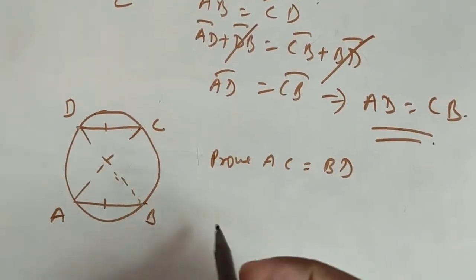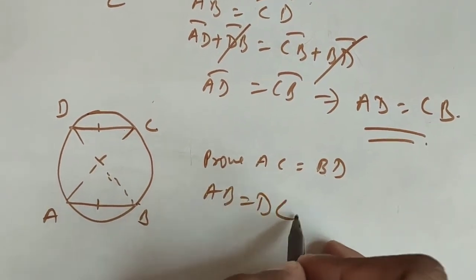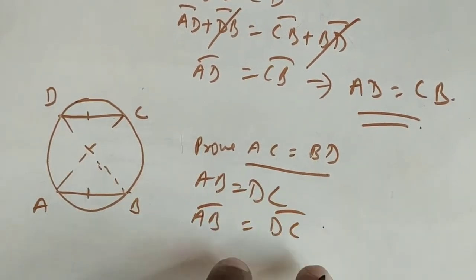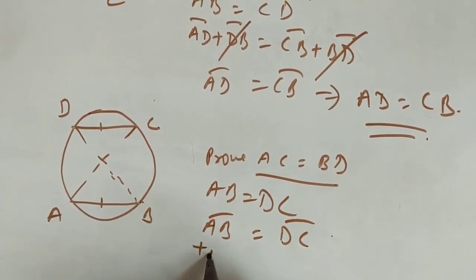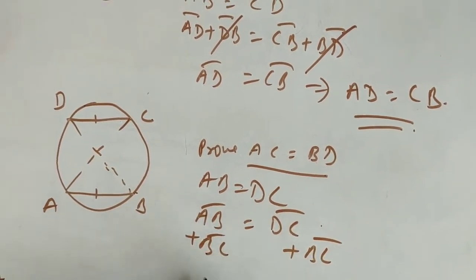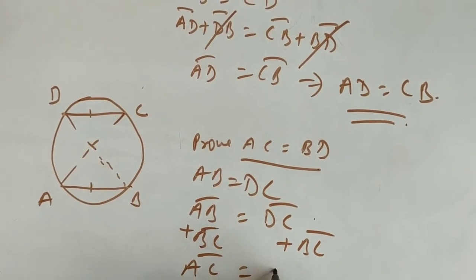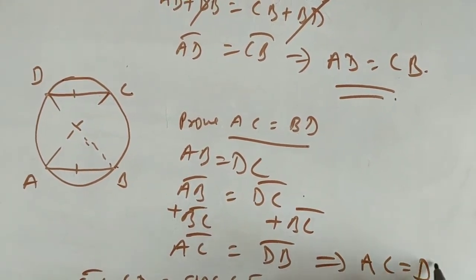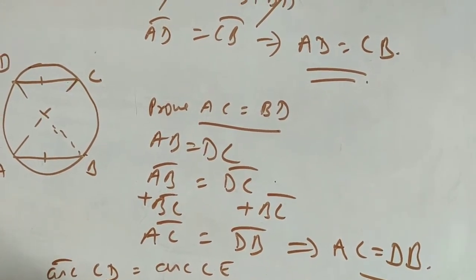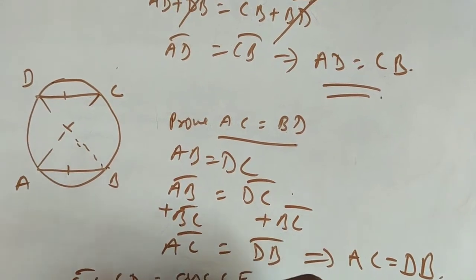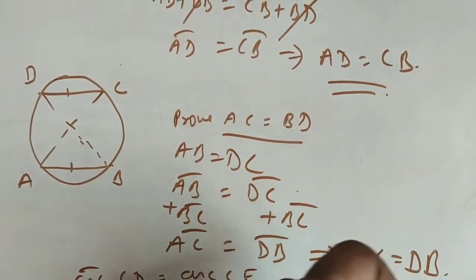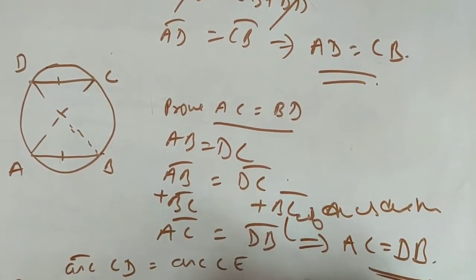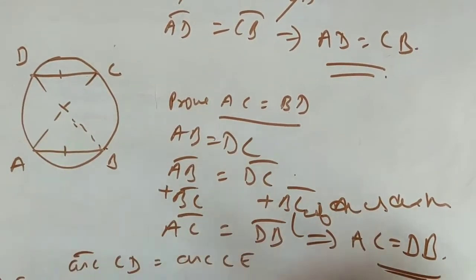Next, it is given that AB equals DC and we need to prove that AC equals BD. If chords are equal, their corresponding arcs are equal. Adding arc BC to both sides: arc AB plus arc BC gives arc AC, and arc DC plus arc BC gives arc DB. If these arcs are equal, then their corresponding chords are also equal, so AC equals BD. In your written work, you must state the reasons — for example, 'if arcs are equal, then their corresponding chords are also equal.'